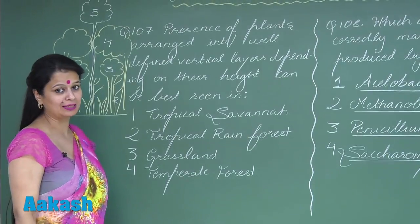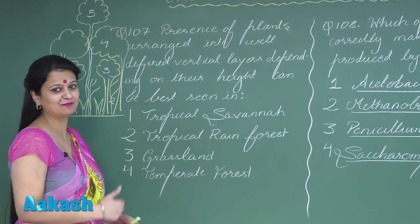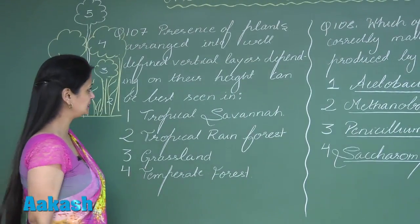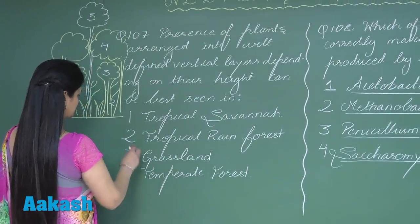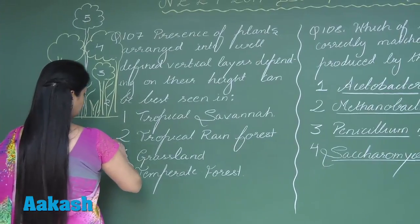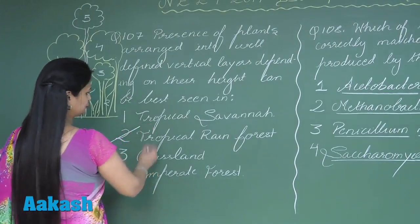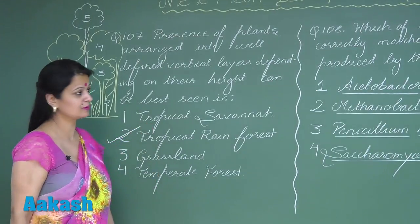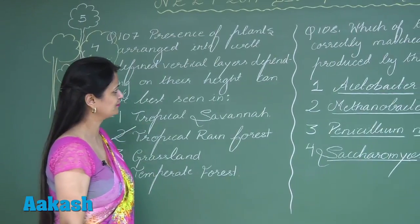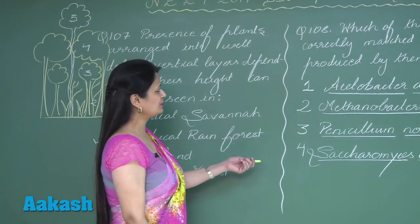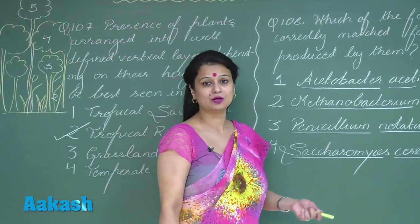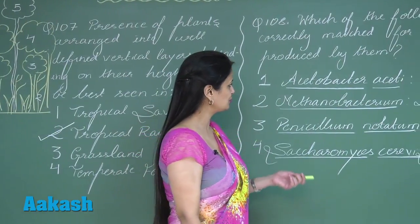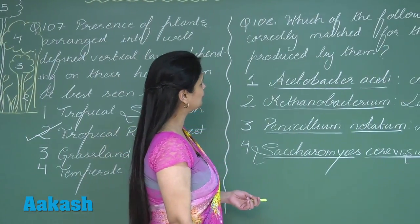Five strata can be seen — five to seven can be there. So the right answer for question 107 is option number 2, that is the tropical rainforest. Question number 108 is associated with economic importance — we have to look for the right option.